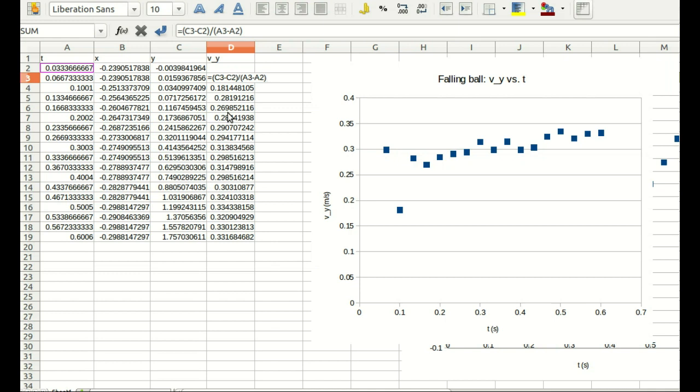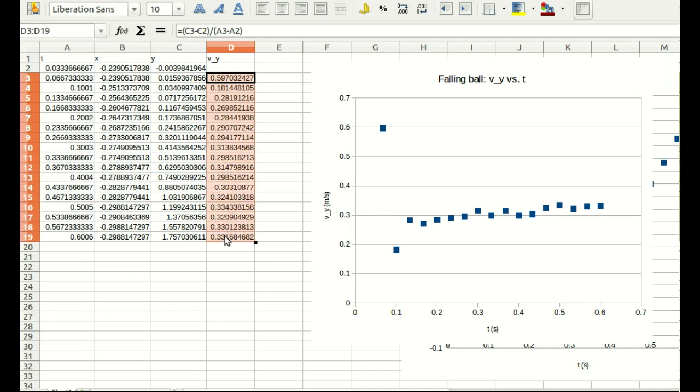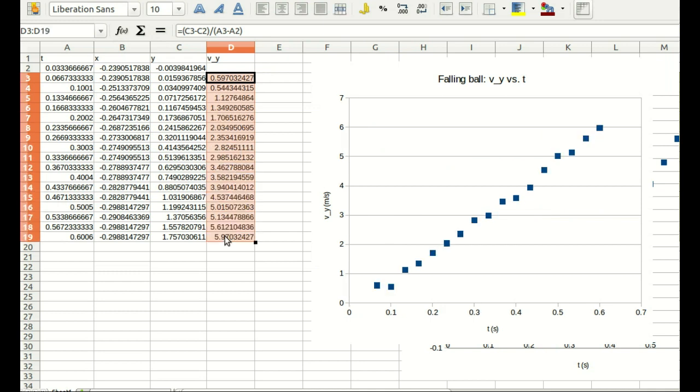So let me do that. I'll change that to the time interval that is this time minus this time. And now I'll apply that down the whole thing. And there is our vy versus t data. And look, vy is increasing as we expect. And what's more, it looks like it's roughly a straight line.